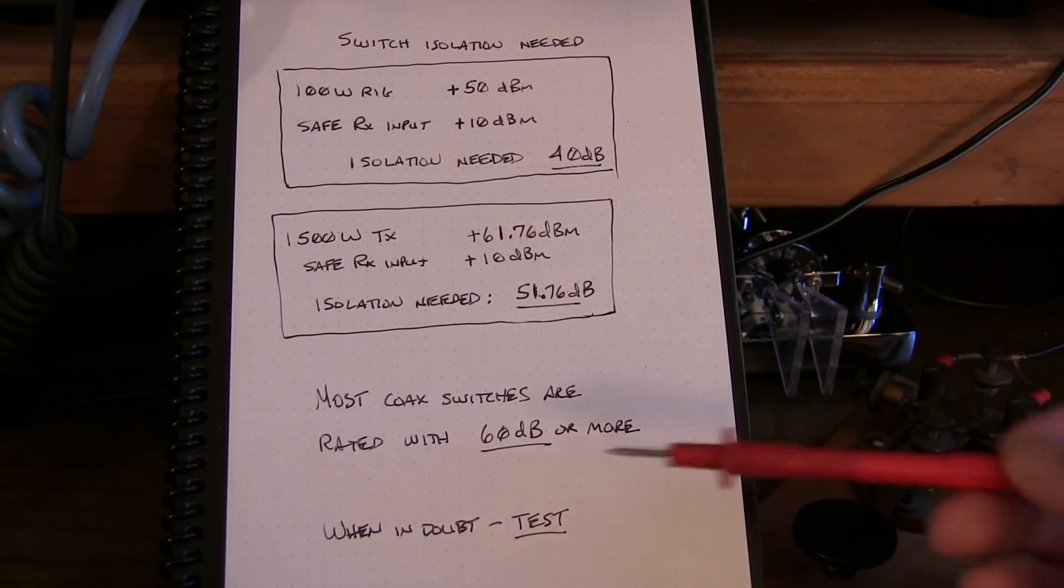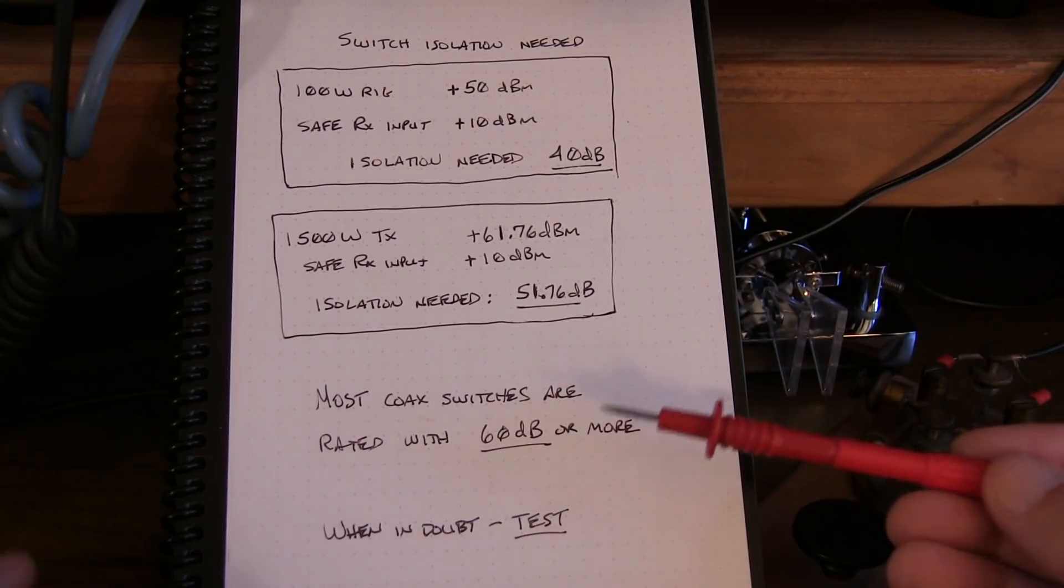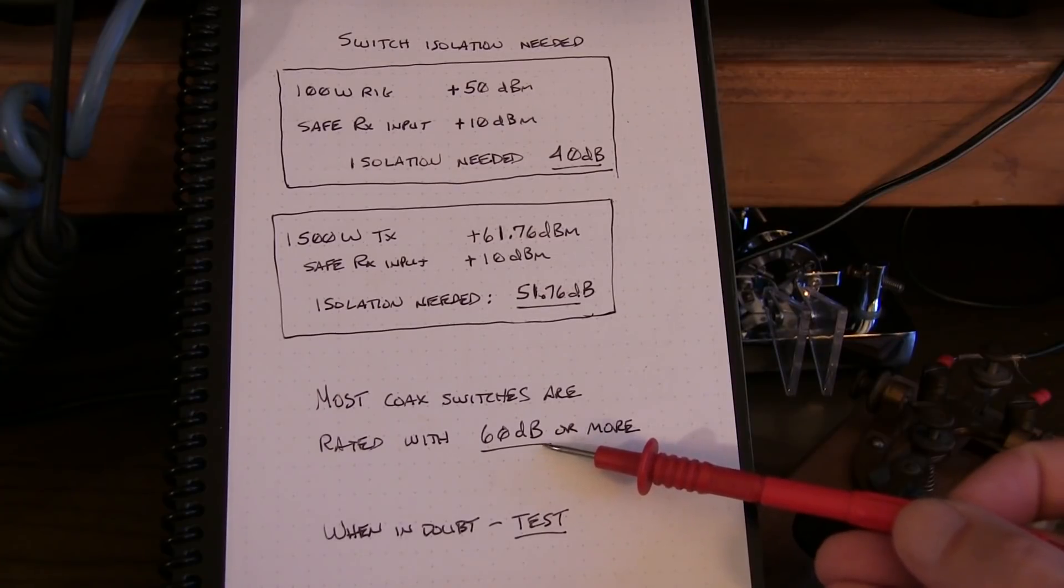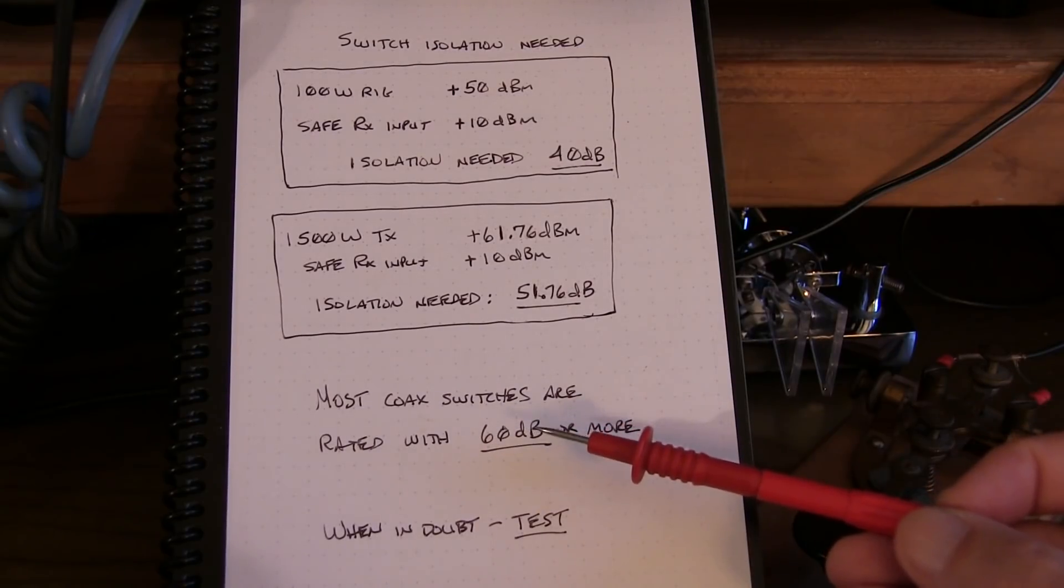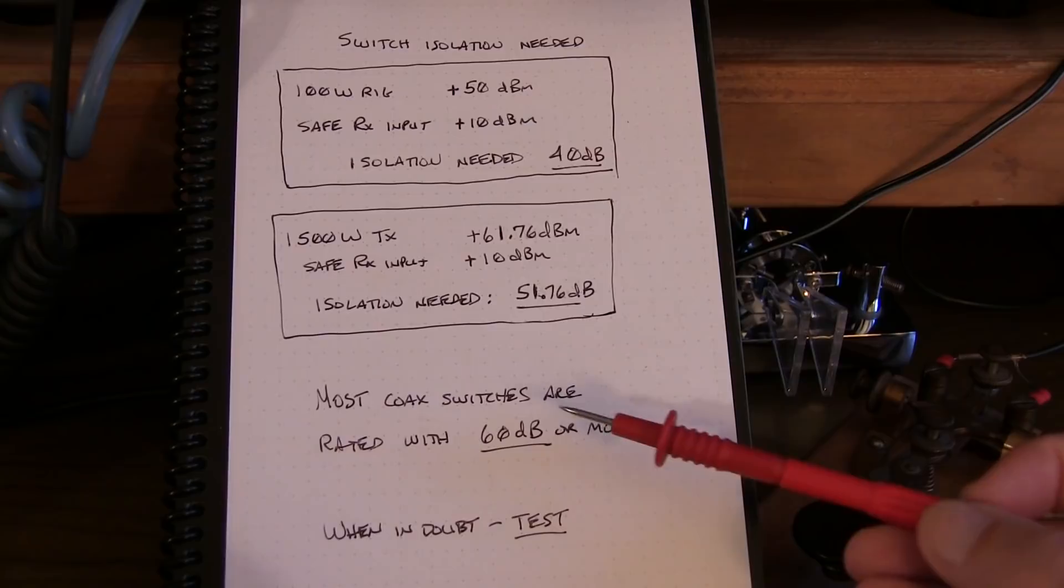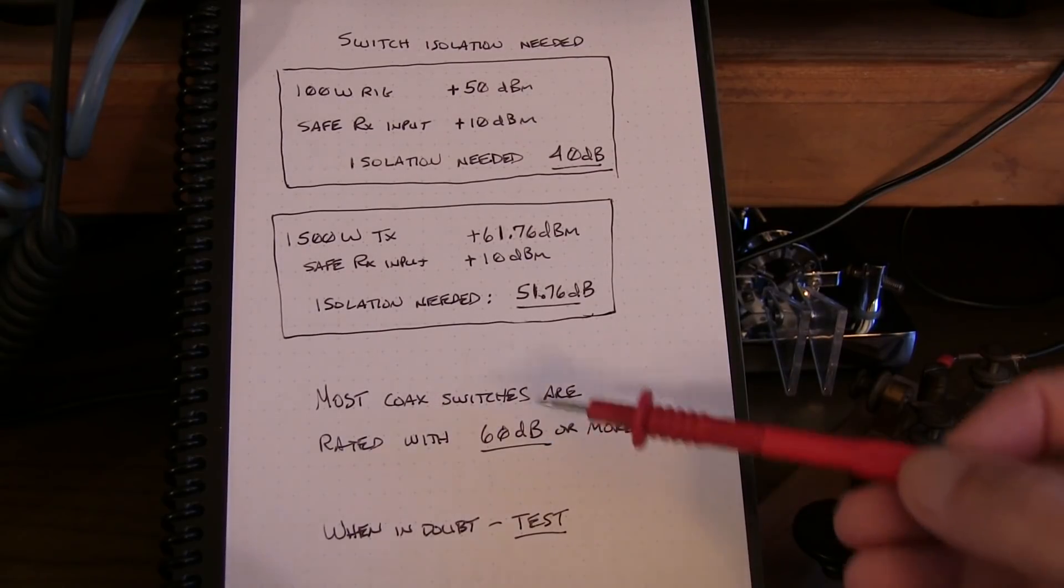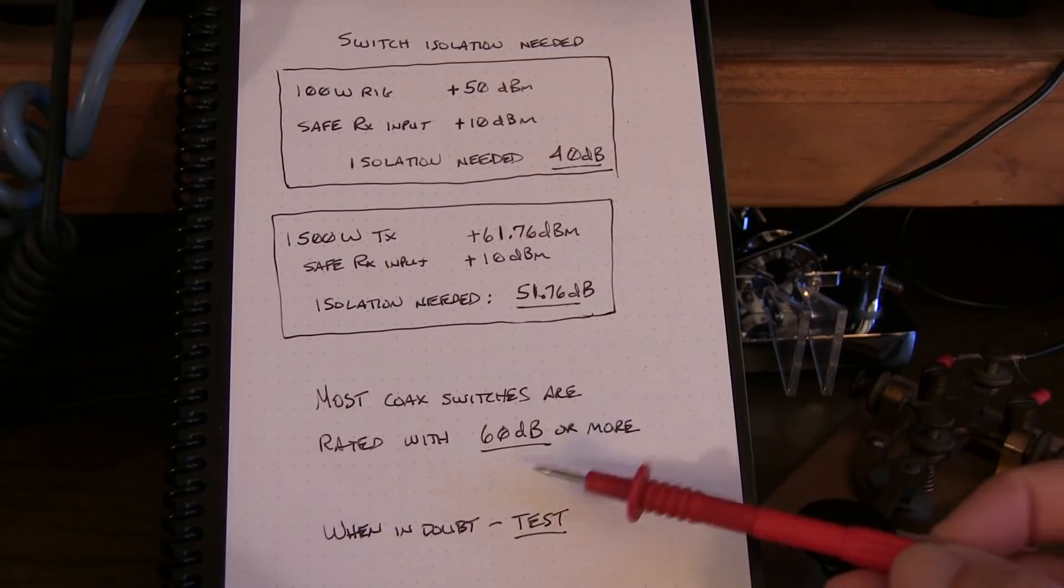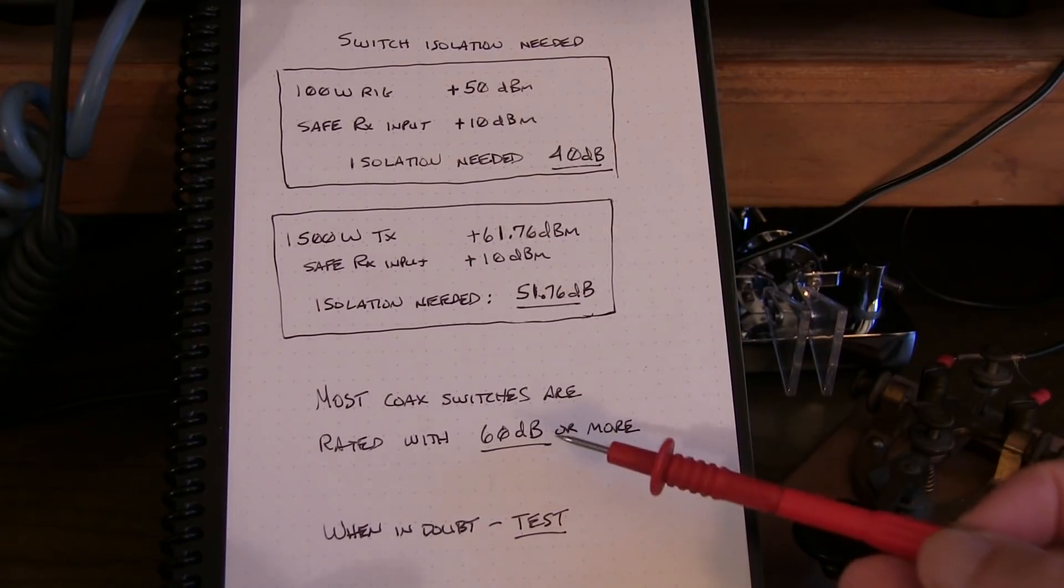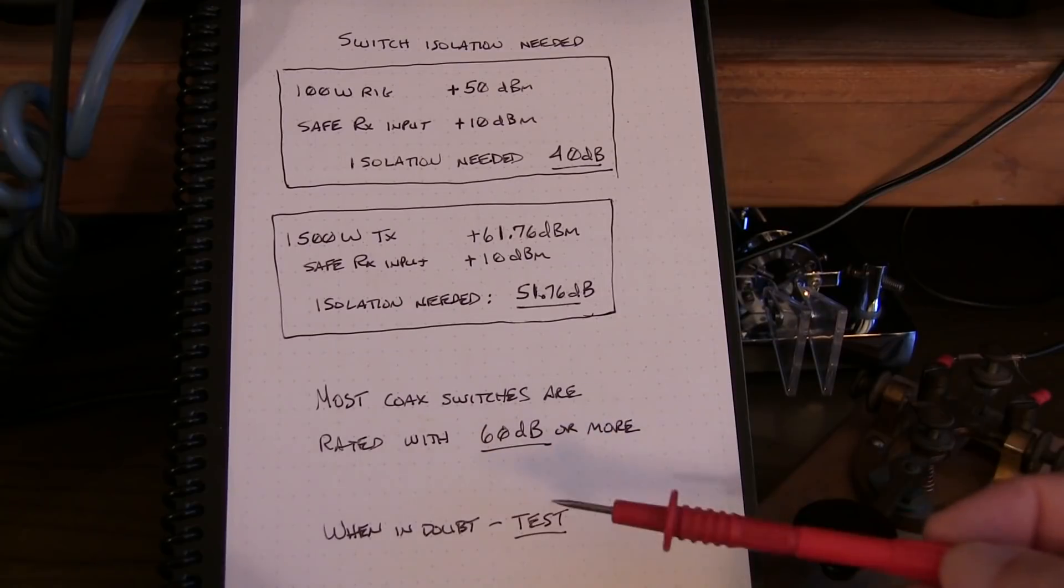Now most of these coax switches are rated to have isolation of 60 dB or better. And usually that's going to be rated over a given frequency range. The isolation is typically the least or the smallest at the highest rated frequency for the switch. So while a switch might have a rating of 60 dB at say 150 megahertz, you get down to 7 megahertz and it might be another 20 or 30 dB better than that. So but if in doubt, test. So let's go do that.